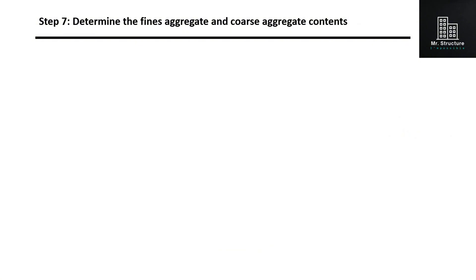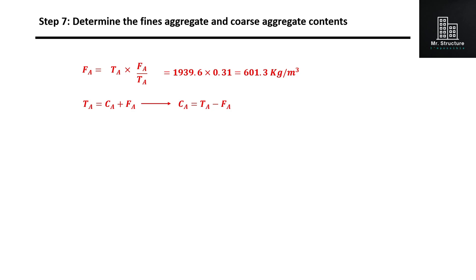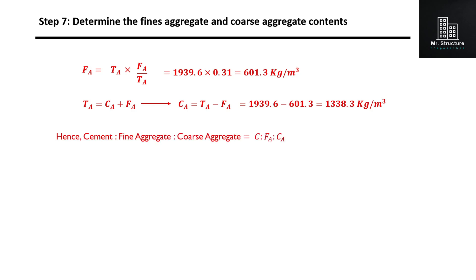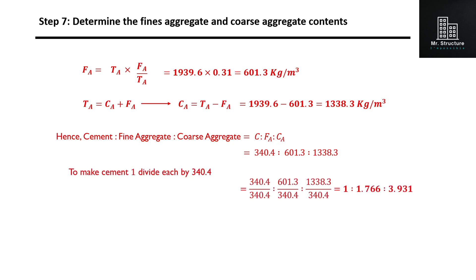We have determined the ratio of fine aggregate to total aggregate, and we also know the total aggregate content. Multiplying the two, we determine the fine aggregate content FA, which comes out to be 601.3 kg per meter cube. We also know that total aggregate is the sum of fine aggregate and coarse aggregate. Using this relation, the coarse aggregate content CA comes out to be 1,338.3 kg per meter cube. So far, we have calculated the mass of water, cement, fine aggregates, and coarse aggregates. Dividing each term by the mass of cement, we obtain the proportion to be 1 : 1.766 : 3.931.